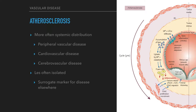Atherosclerotic lesions may occur in isolation, but as a rule, atherosclerosis is a systemic disease affecting numerous arterial locations. Furthermore, an atherosclerotic lesion in one location, for example the lower limbs, serves as a surrogate marker for disease elsewhere, for example the coronary arteries.